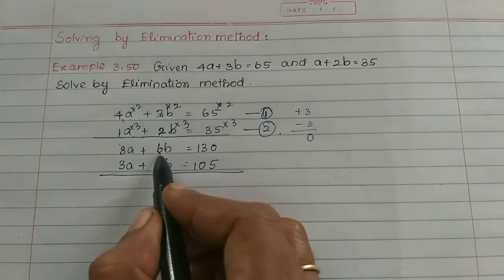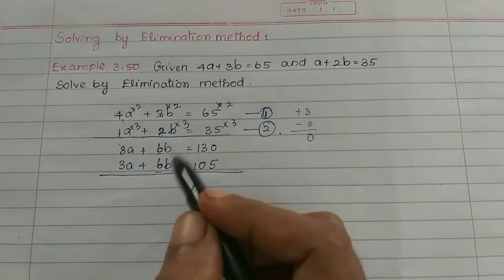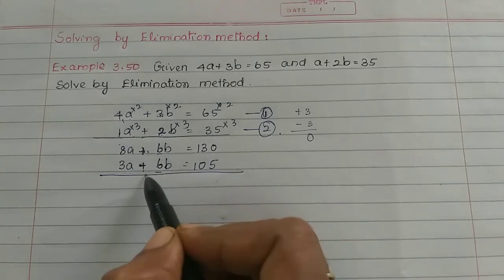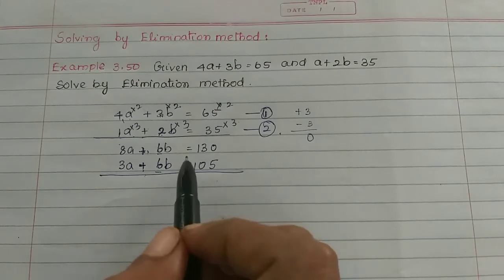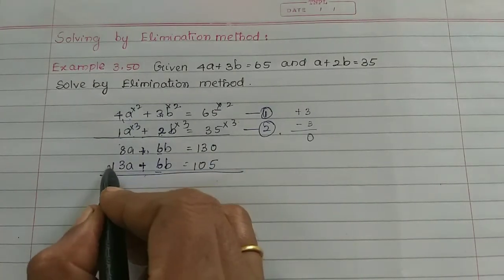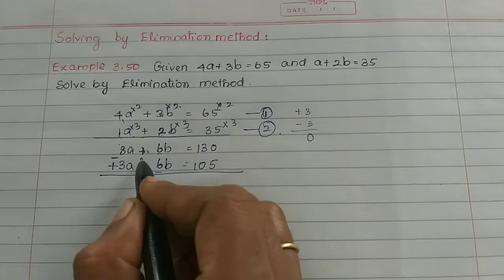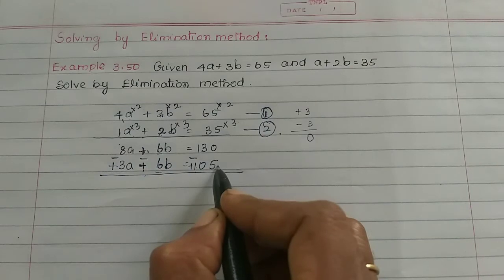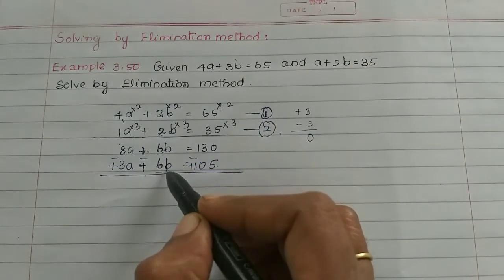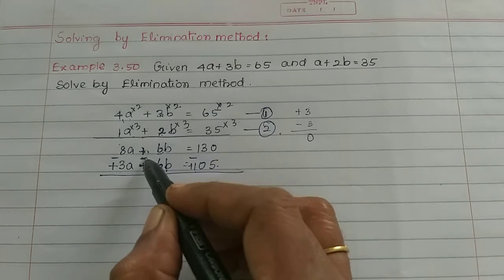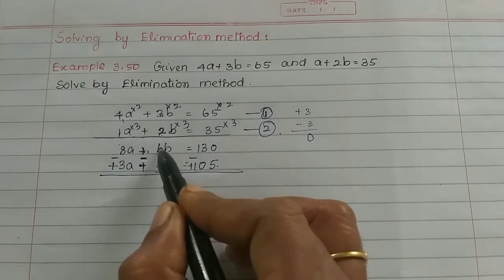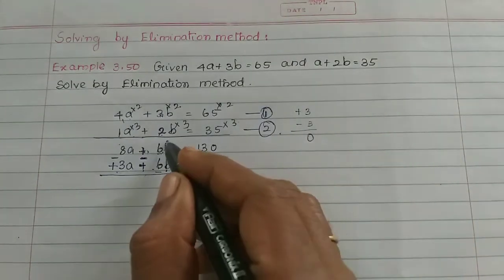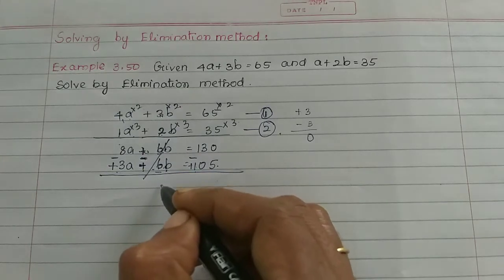Now look at the b coefficients — the two equations both have 6b, so they are equal. One equation has a plus sign and the other also has a plus sign. Since both signs are the same, we subtract. When we subtract, the b terms cancel out and become zero.